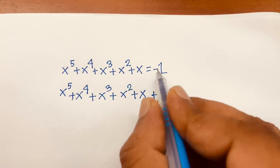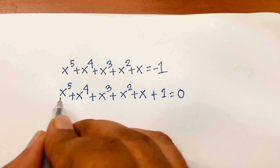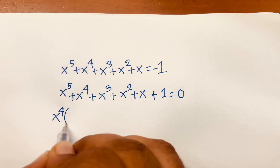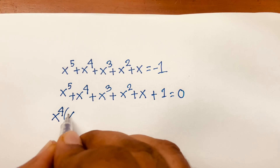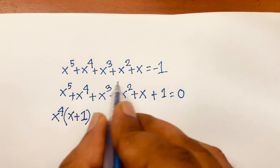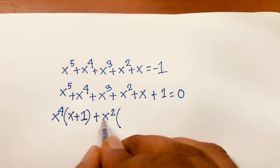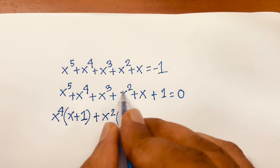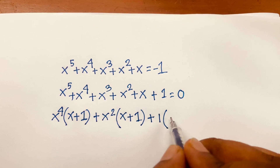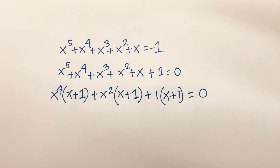I move the minus 1 to the left side to get positive 1. Then I can see x to the power 4 is common, so factoring gives x⁴(x + 1), and x² is common in the next group giving x²(x + 1), and 1 is common giving (x + 1).